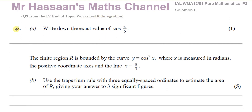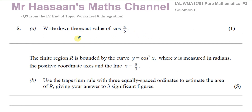This is question 5 from the Solomon E paper. The first part of the question is about simply writing down the exact value of cosine pi over 6. We know that the cosine of pi over 6 is equal to root 3 over 2.